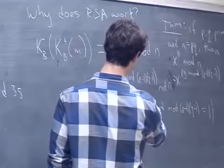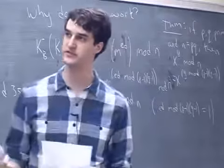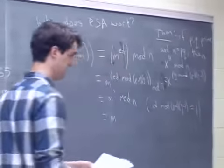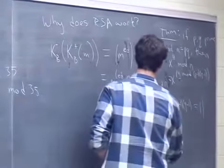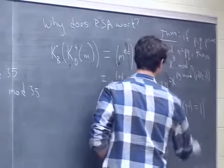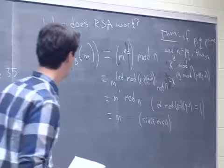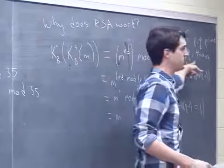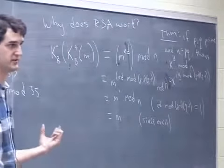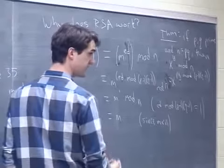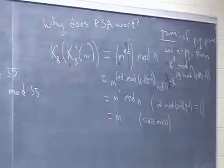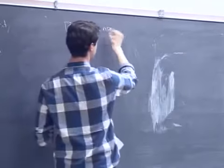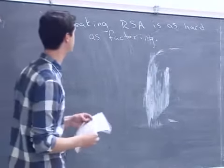m^1 is just m, and since m < n, we recover the original message. The security of RSA: if you can factor n into p and q, you can break RSA. So RSA is only as hard as factoring an integer — its security relies on the fact that factoring large integers seems to be a hard problem.